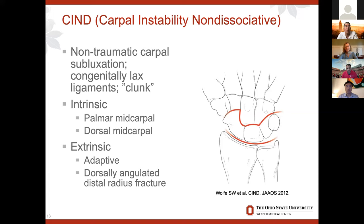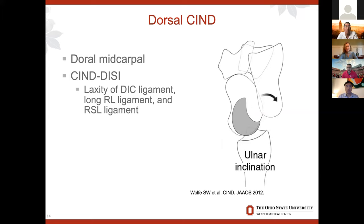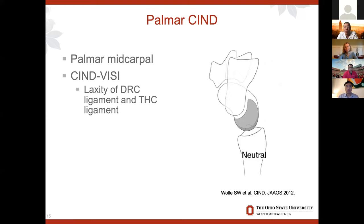Dorsal carpal instability non-dissociative is usually caused by laxity of the dorsal intercarpal ligament, and also the long radiolunate and radioscapholunate ligaments. The dorsal intercarpal ligament serves as a band to hold the capitate head in place, almost like a belt. You can use the term CIND-DISI as well, because you get a DISI deformity. Likewise, you can get palmar midcarpal instability non-dissociative, also known as CIND-VISI, usually from laxity of the dorsal radiocarpal ligament and the triquetrohamatecapitate ligament.